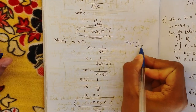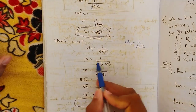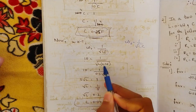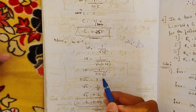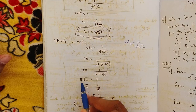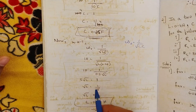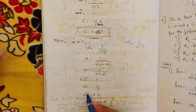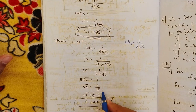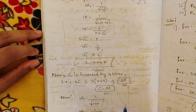Now we find inductance L using omega naught = 1 / √(LC). Omega naught is 10 radian per second and C is 0.25, so √0.25 = 0.5. Therefore 10 = 1 / (0.5 × √L), giving 5√L = 1, so √L = 0.2, meaning L = (0.2)² = 0.04 Henry. We have now found all values: R = 10Ω, L = 0.04H, C = 0.25F.